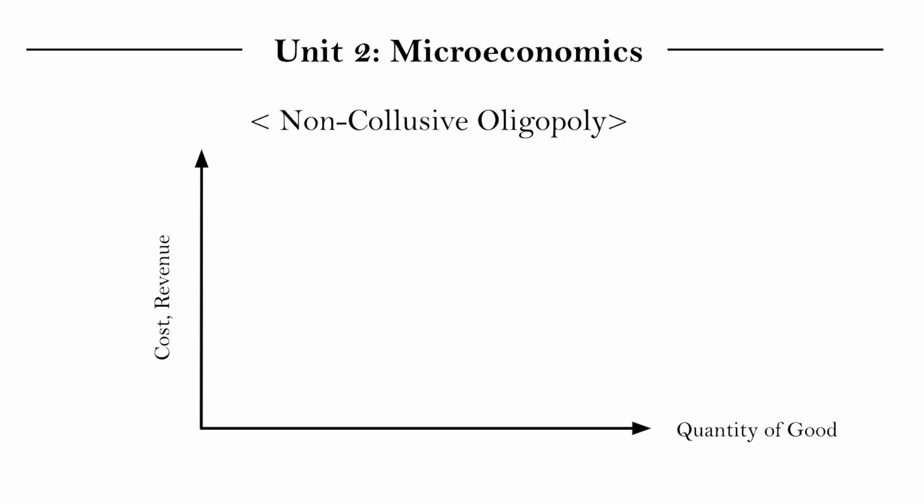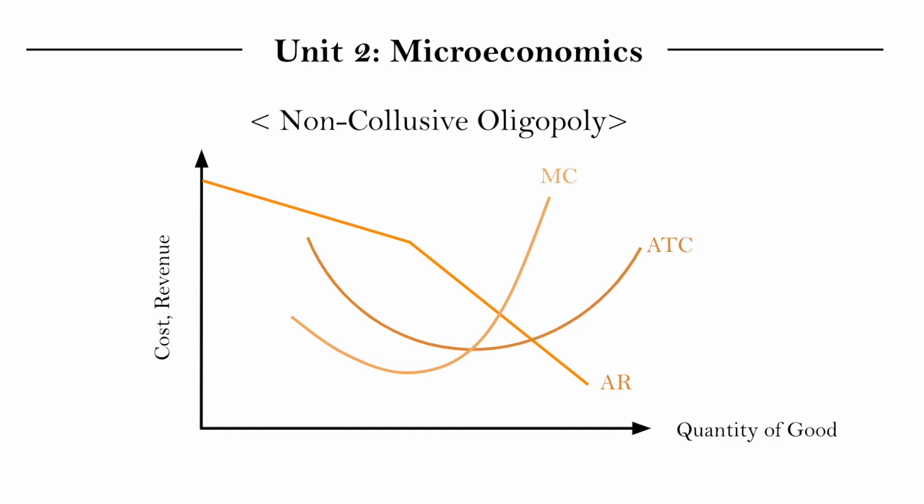Let's look at the diagram for a non-collusive oligopoly. We first have the cost curves, which is normal, and here comes the weird part — the revenue curves, where the AR curve is all crooked and we have a MR curve that is all chunked up. Overall this is a funky looking diagram, and the good news is you don't need to know how to draw it. This isn't a required diagram on the IB syllabus — I think it used to be — and I'm just using it here to help us understand a non-collusive oligopoly.